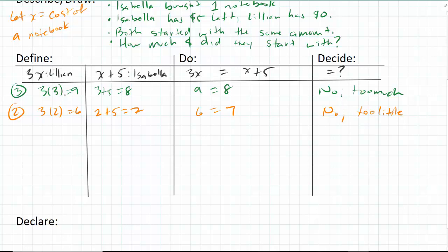Okay, so it looks like it's right in between, so I think we know the answer. Let's double check. Two dollars and fifty cents. Three times two dollars fifty cents is going to be seven dollars and fifty cents. Two dollars fifty cents plus the five dollars is seven dollars fifty cents. They're equal.